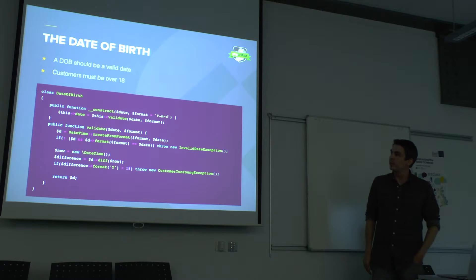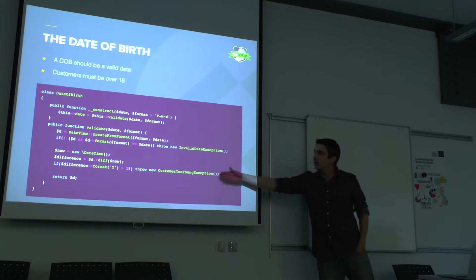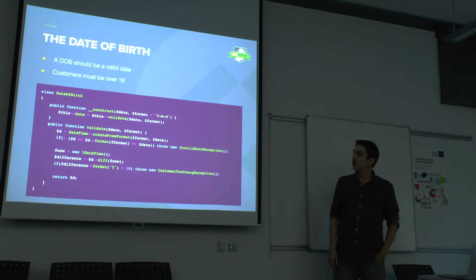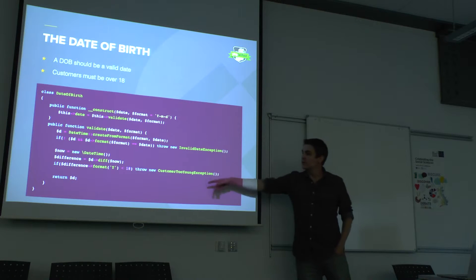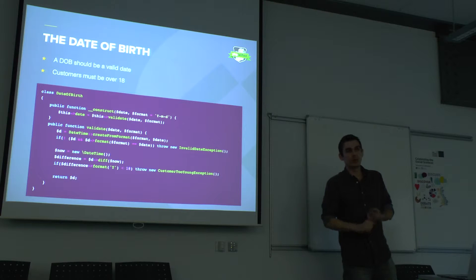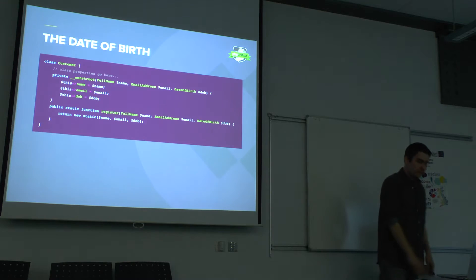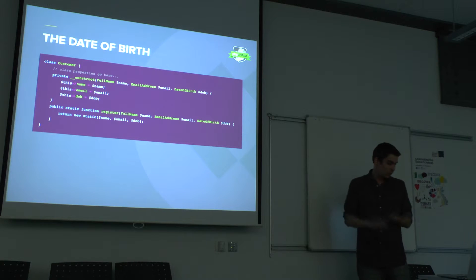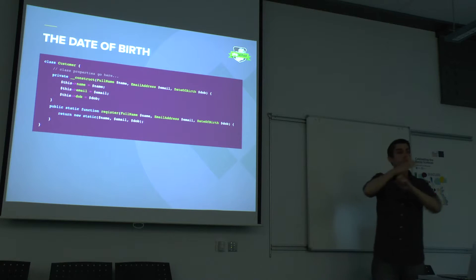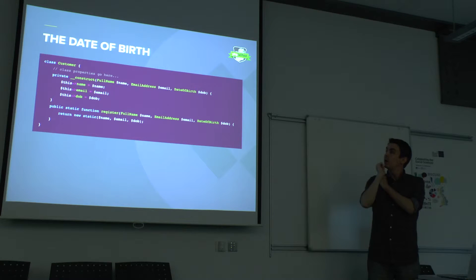Date of birth is slightly more complicated but pretty much works on the same basis. We create a DateOfBirth object, we make sure it's a valid date, and then we make sure that the person's not too young. I haven't tested any of this code — I just wrote it verbatim. I also wrote some custom exceptions, which I find useful because we've got two different instances here where something can go wrong, and we can catch those and do something completely different with each one. And finally we pass that in. So in this case, are we meeting the business rules? A customer cannot be registered without a full name consisting of a forename and surname, without a valid email address, or without a date of birth — and the date of birth is going to be validated.